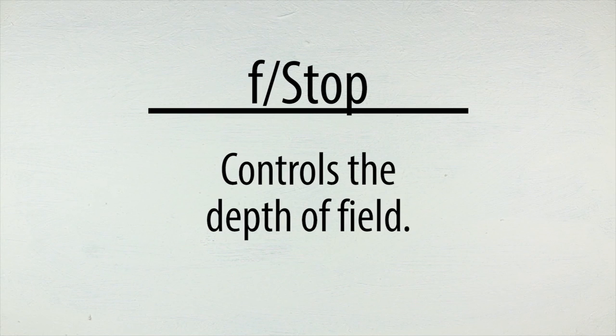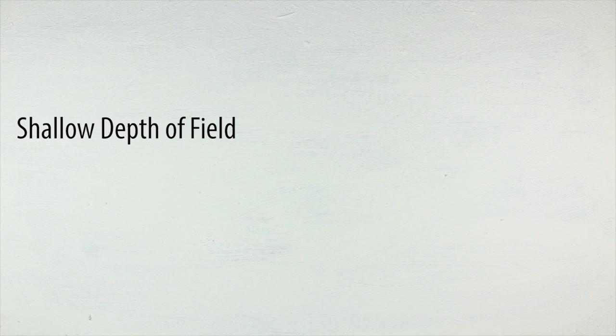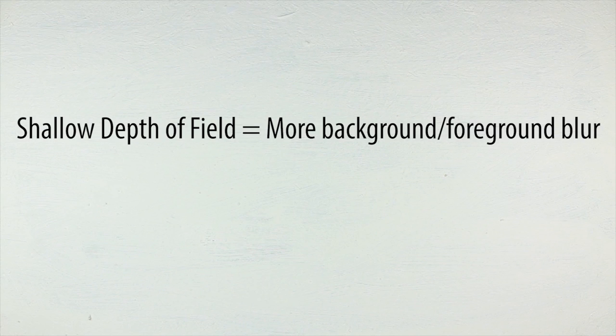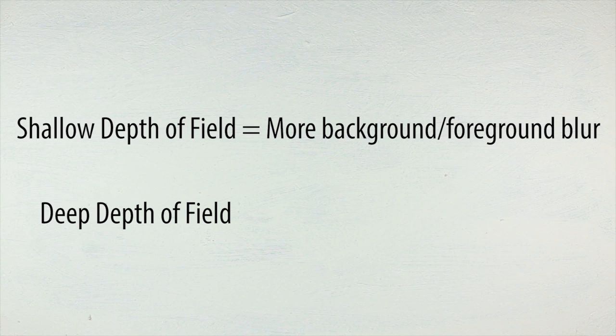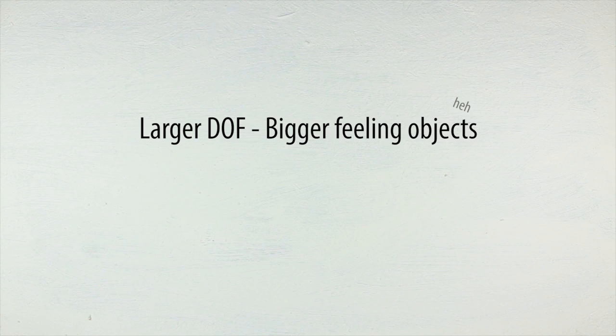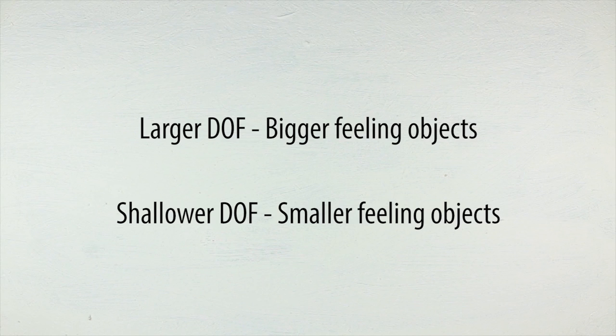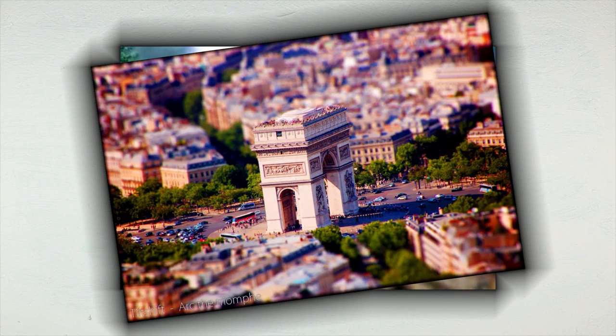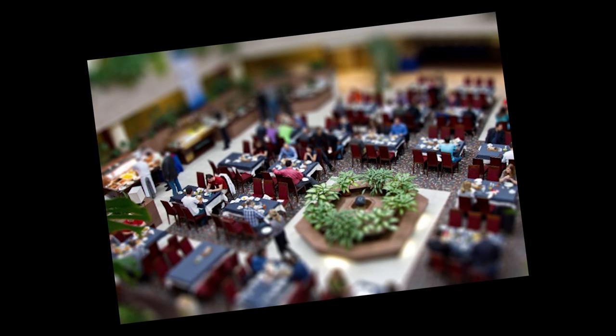F-stop is what controls the camera's depth of field, which is how much of the objects in frame are in focus, depending on their distance from the camera. If the f-stop is very shallow, only a short distance is going to be in focus. If it's a lot deeper, pretty much everything in frame is in focus. A lot of the time with stop-motion's relatively small scale, a less shallow depth of field helps create the illusion that tiny objects are actually normal size, whereas a shallow depth of field has the opposite effect. Think about tilt shift images — the depth of field is so small that giant objects in cities look tiny! I love tilt shift stuff.